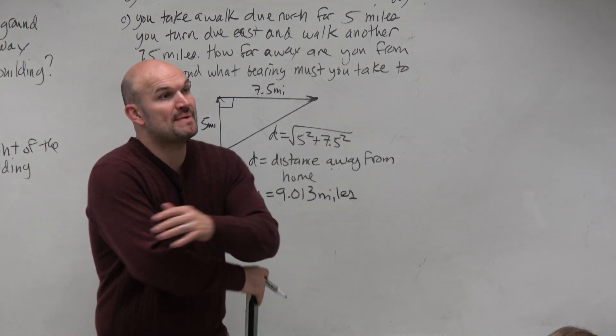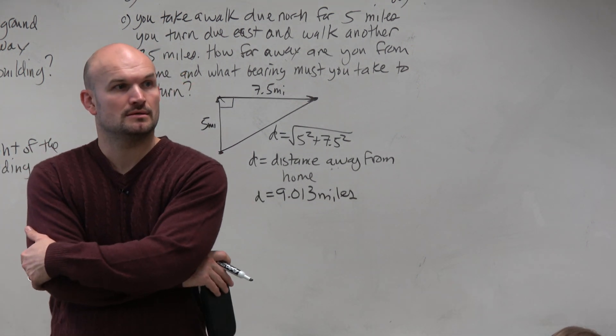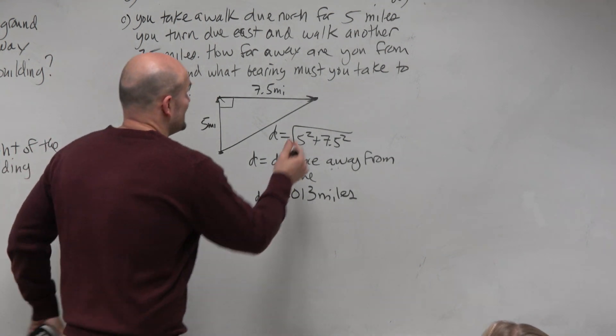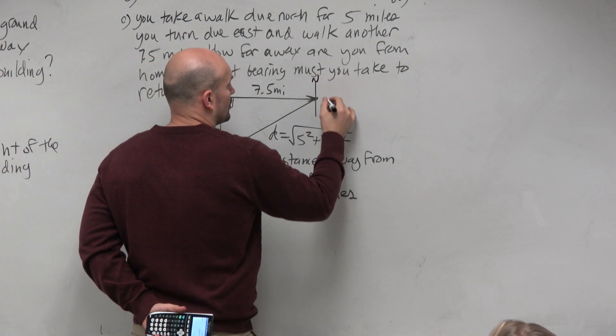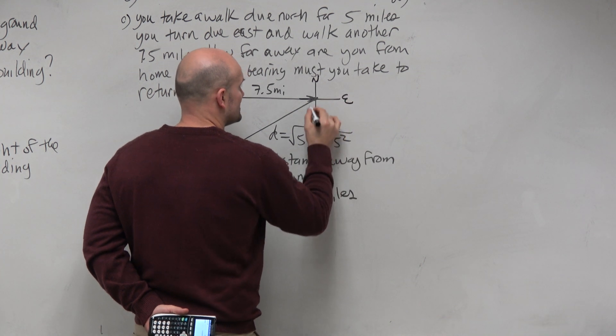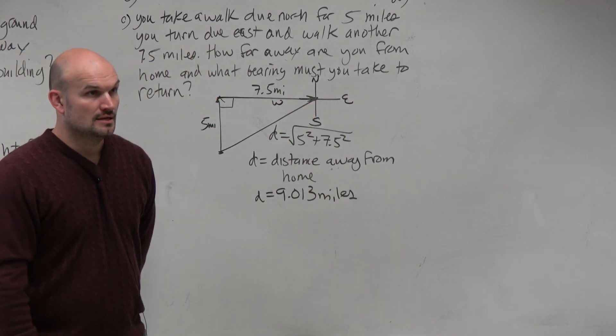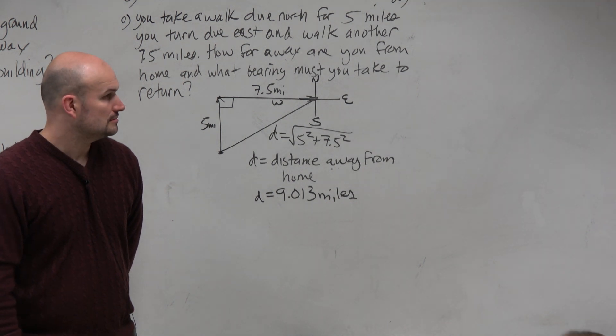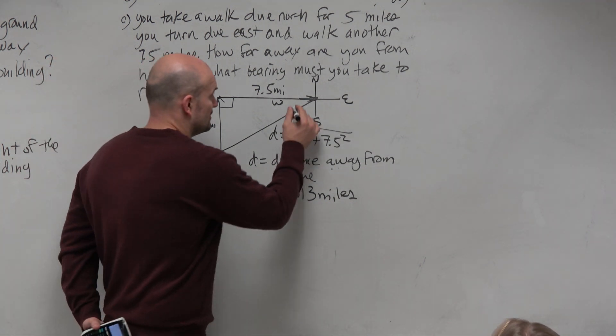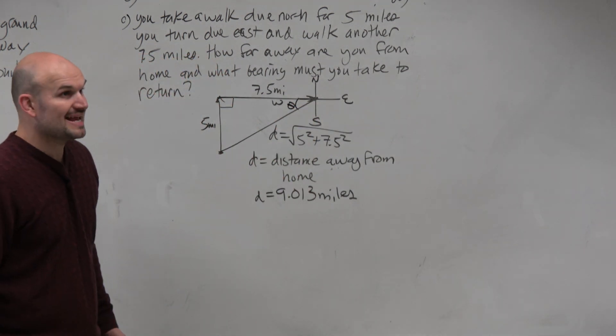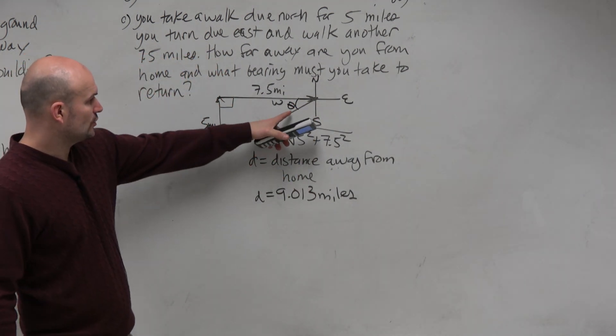Okay, now here's the interesting question. It says, what's the bearing you need to take home? So again, I'm asking for bearing, right? So that means I need to create a north, an east, a south, and a west. Now, the only thing I can figure out, the only thing I have that's a part of my triangle is this, right? That angle. Can I set up an equation for that angle?